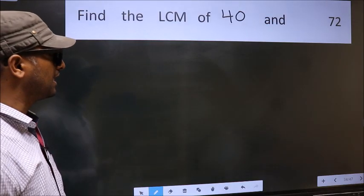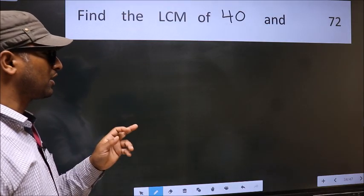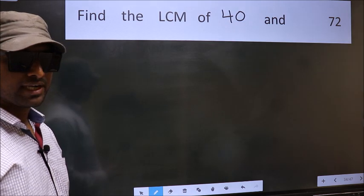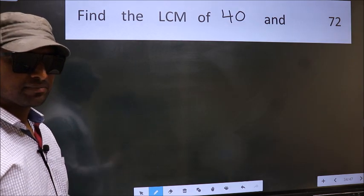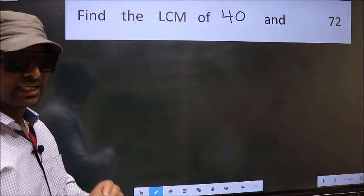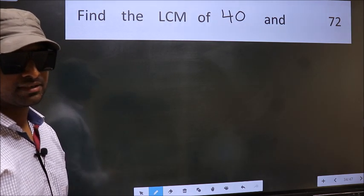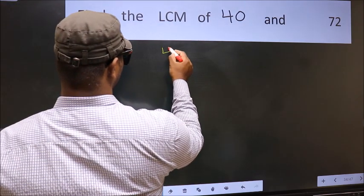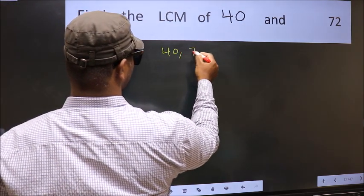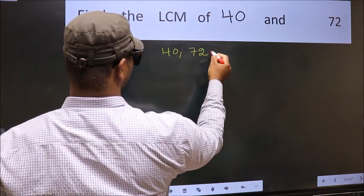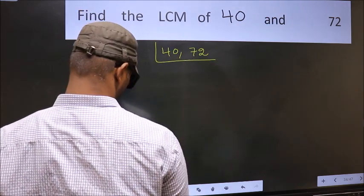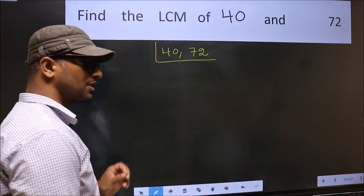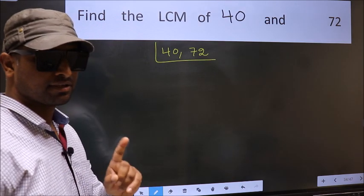Find the LCM of 40 and 72. To find the LCM, first we should frame it in this way: 40 and 72. This is your step 1.